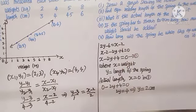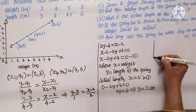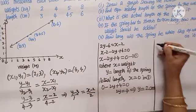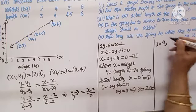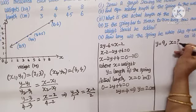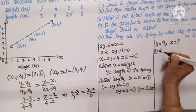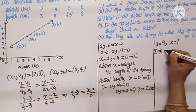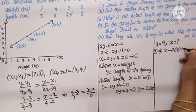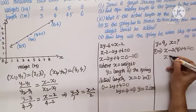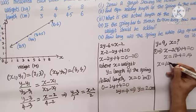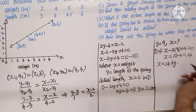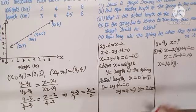Fourth subdivision: if the spring is to stretch to 9 centimeters, how much weight should be added? Given Y equals 9, put it in the equation: X minus 2 times 9 plus 4 equals 0, so X equals 18 minus 4, that is 14. Therefore X equals 14 kilograms is required for the spring to stretch to 9 centimeters.